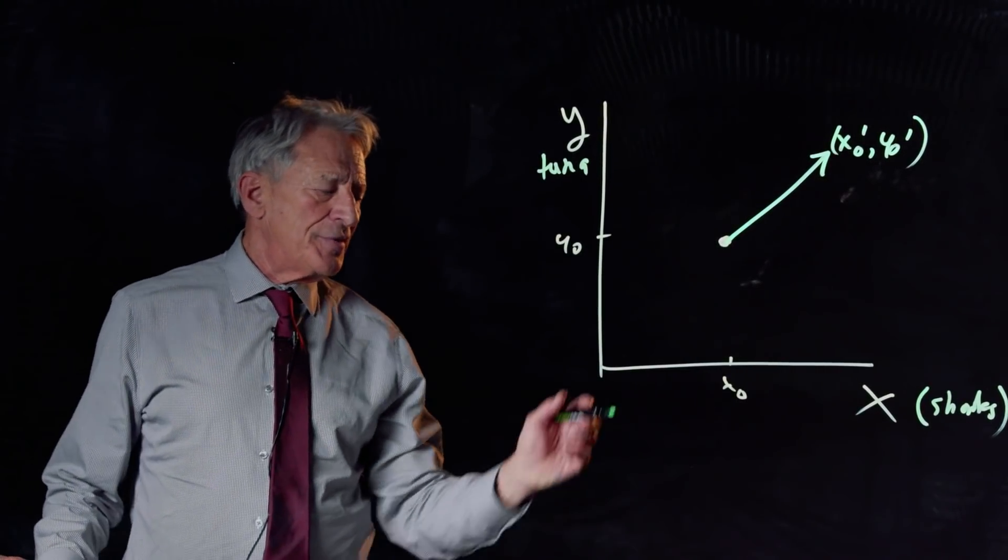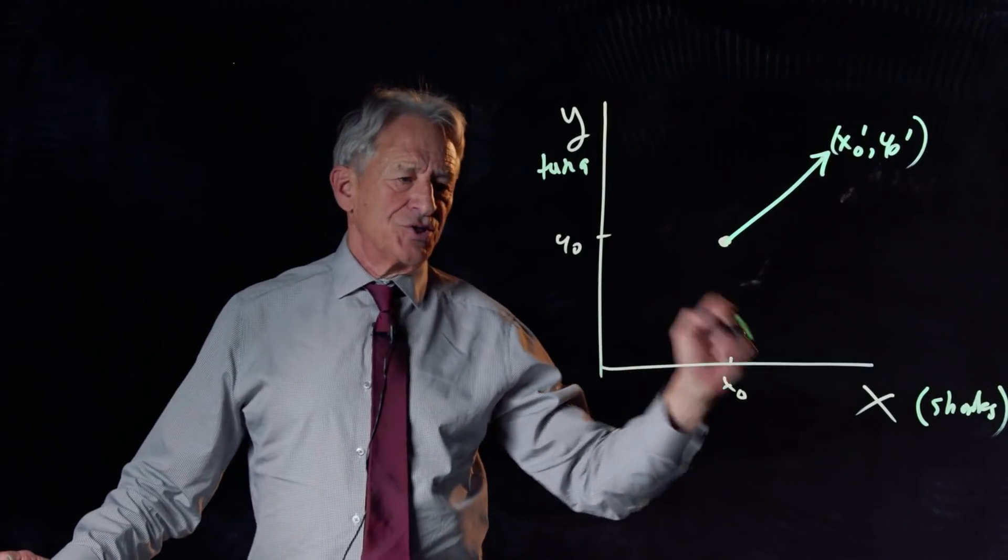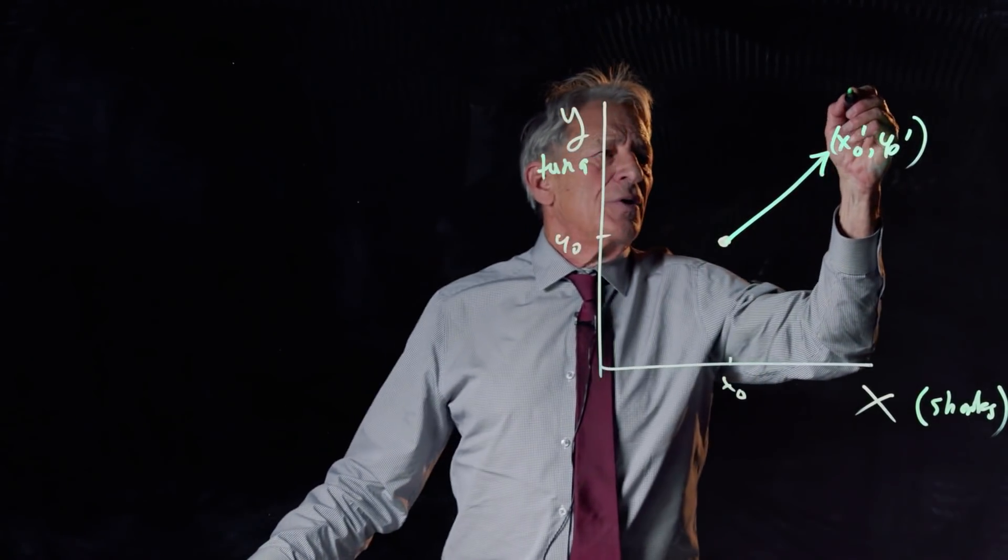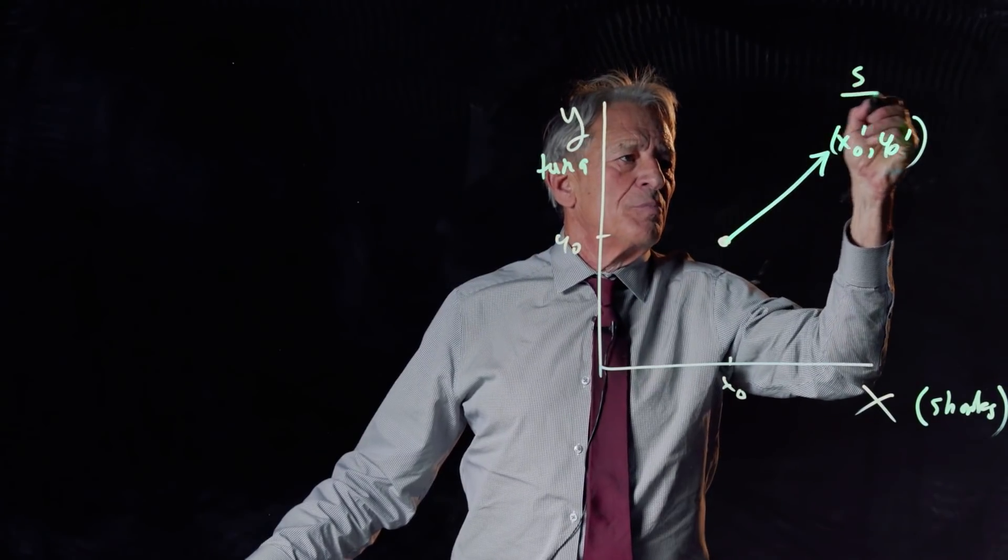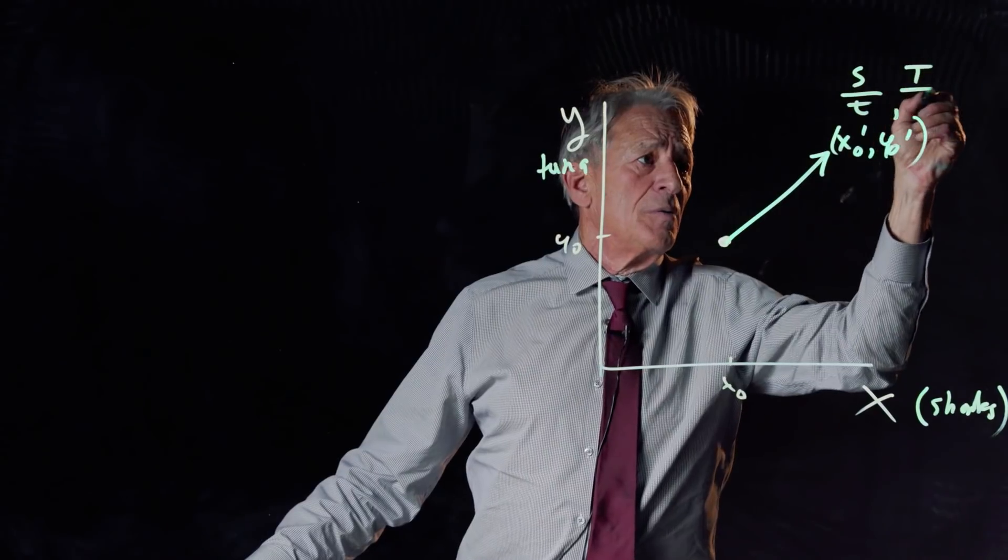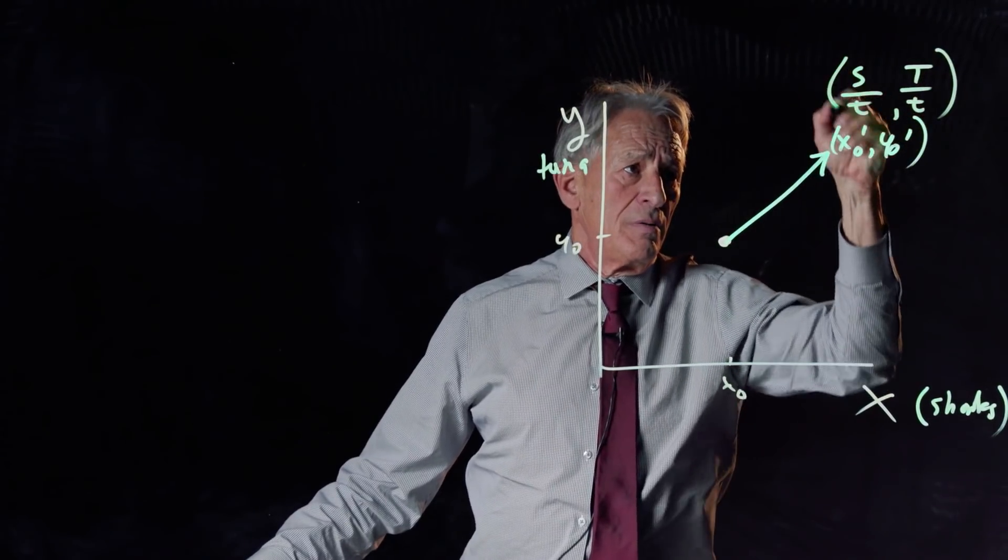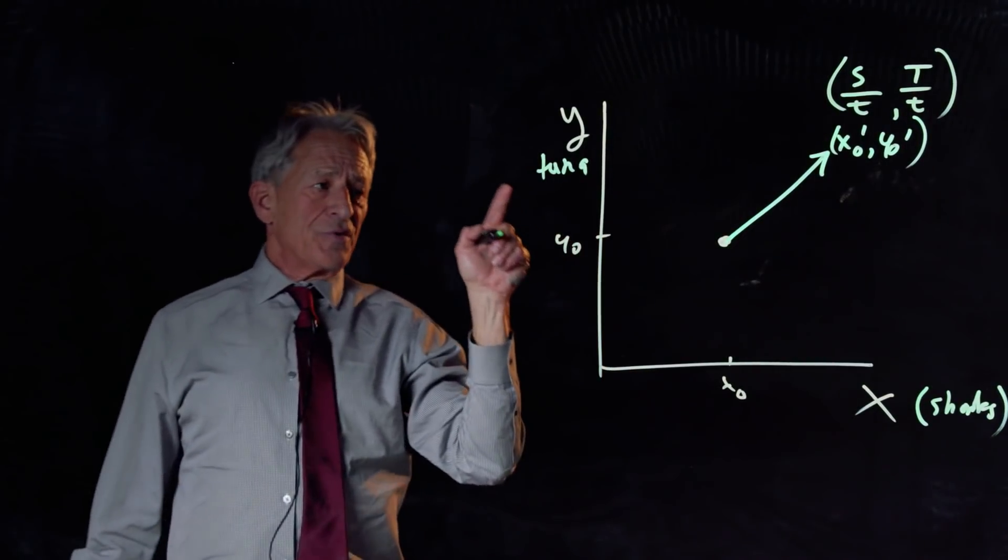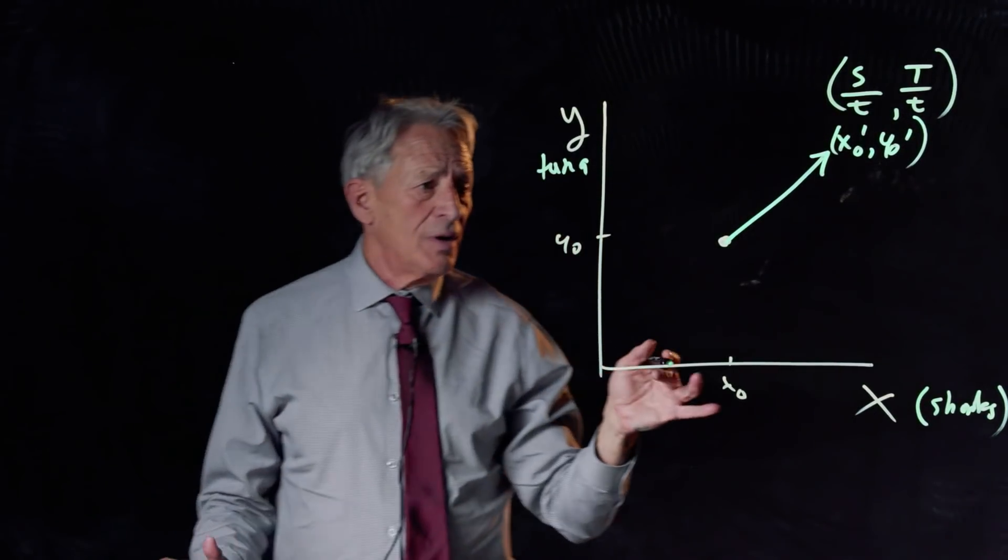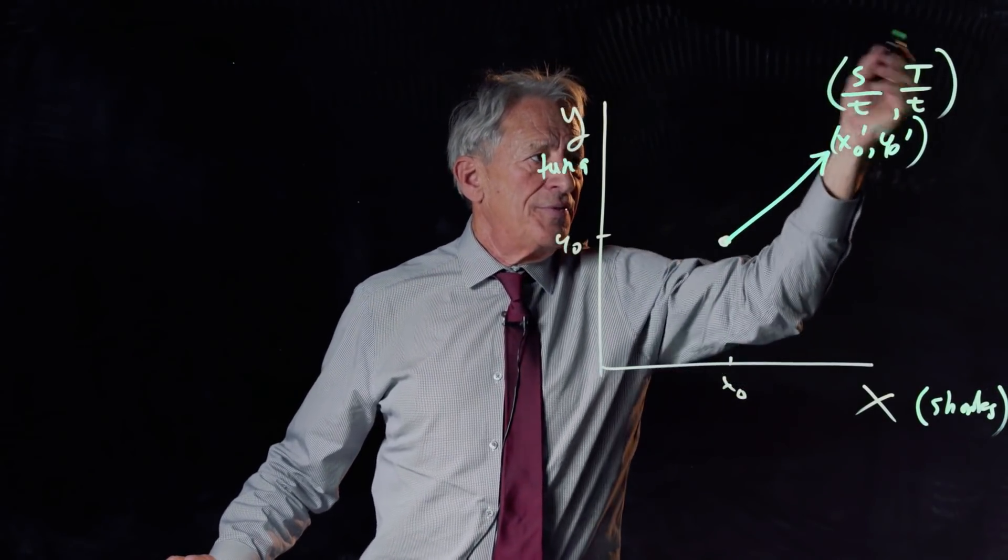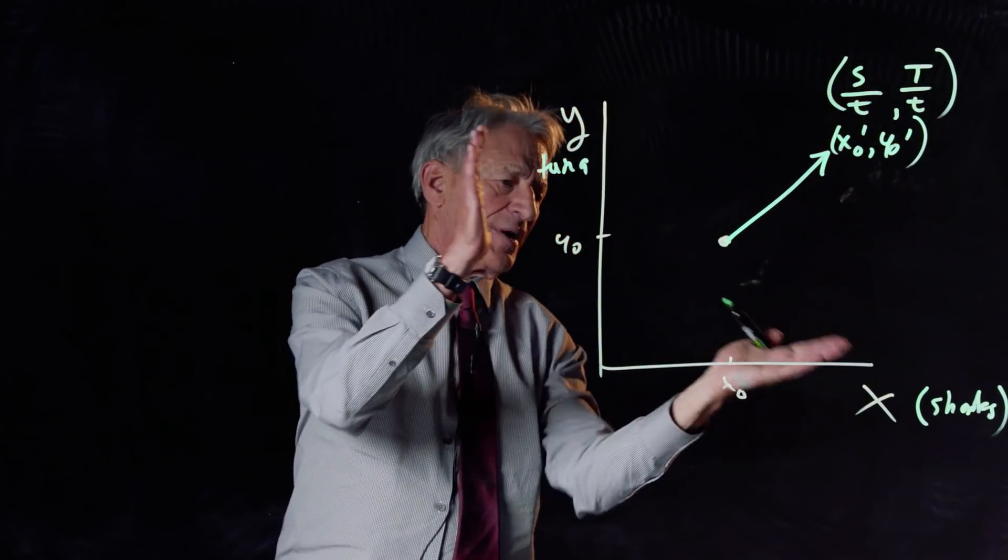the units of the change vector are not sharks and tuna. The units of the change vector are sharks per unit time, and tuna per unit time. Those are changes, those are velocities, as it were, and you really can't put these units onto that space.